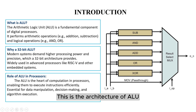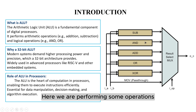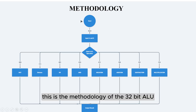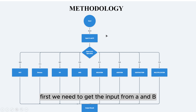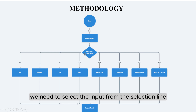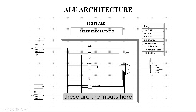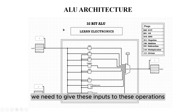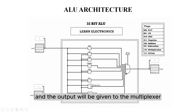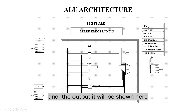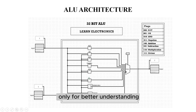This is the architecture of the ALU. Here we are performing some operations and all these operations' output will be given to the multiplexer. This is the methodology of the 32-bit ALU. First, we need to get the input from A and B. Next, we need to select the input from the selection line — it will perform various operations and we need to output the results. These are the inputs A, input 1 and input 2. We need to give these inputs to the operations and the output will be given to the multiplexer. The multiplexer will select the signals and the output will be shown. Here I have used Logisim, which is not necessary for the project but only for better understanding.